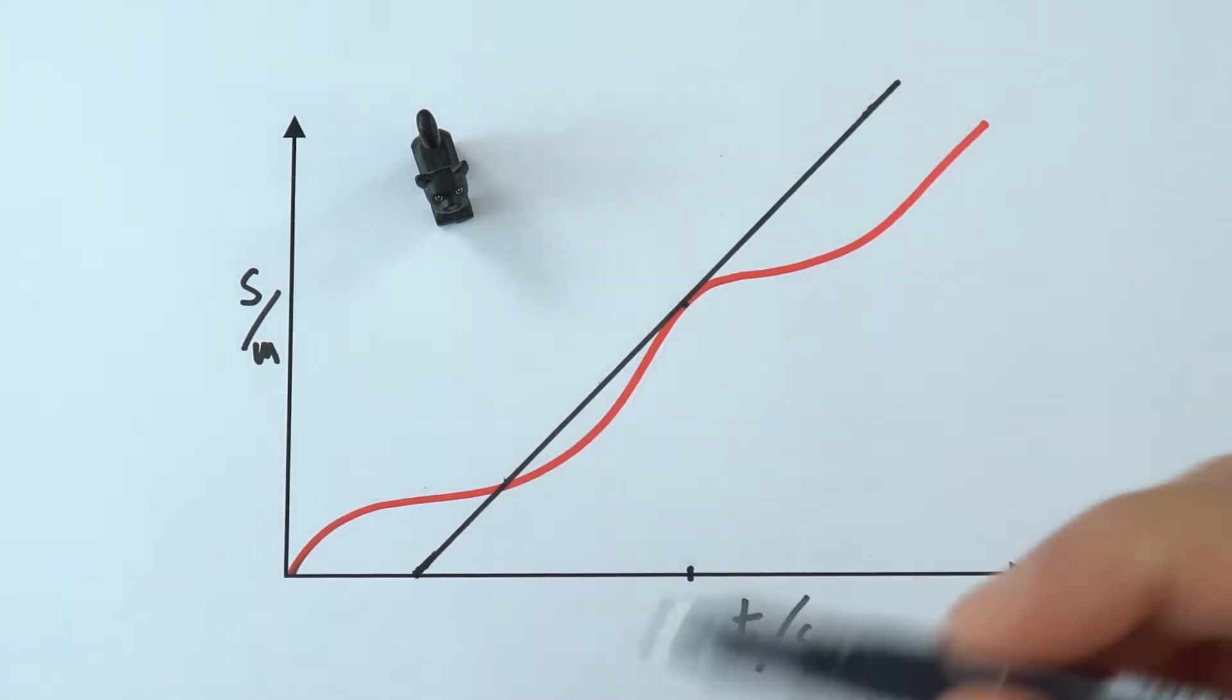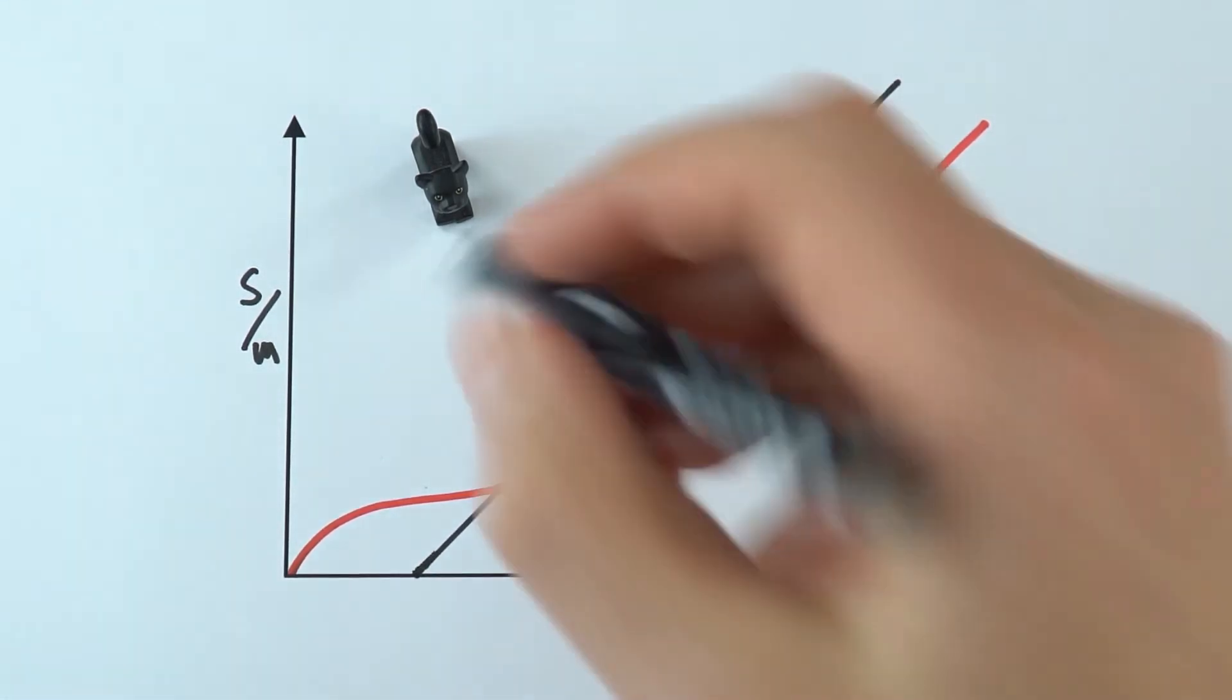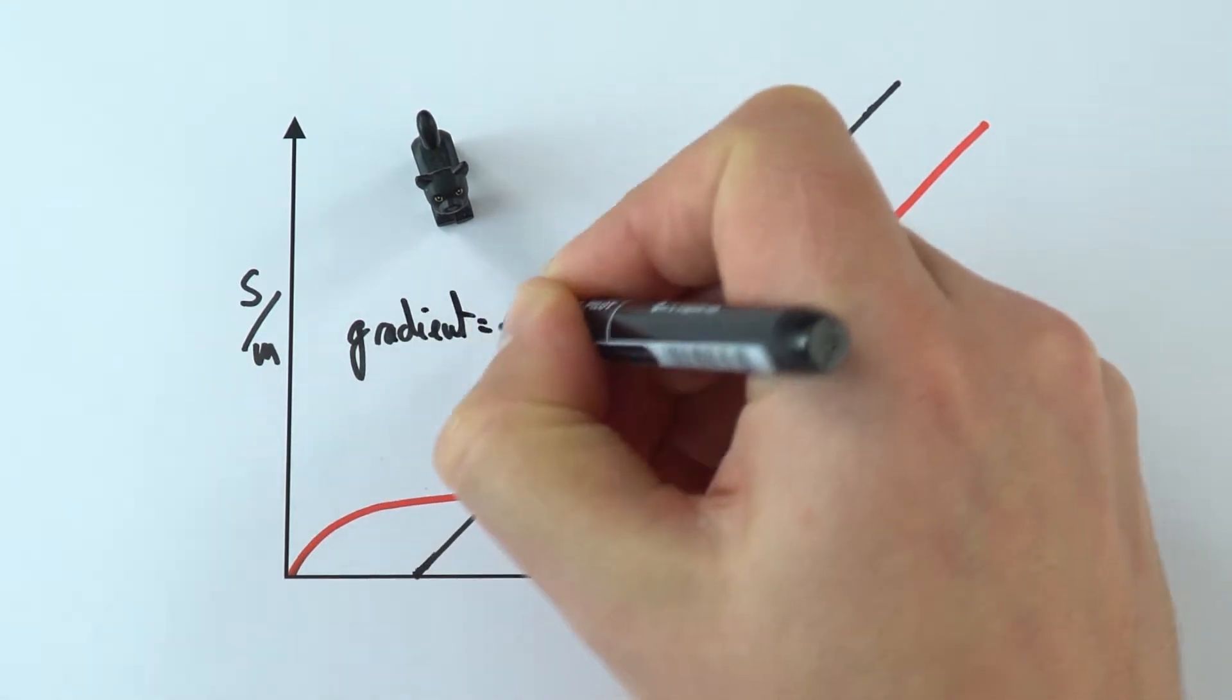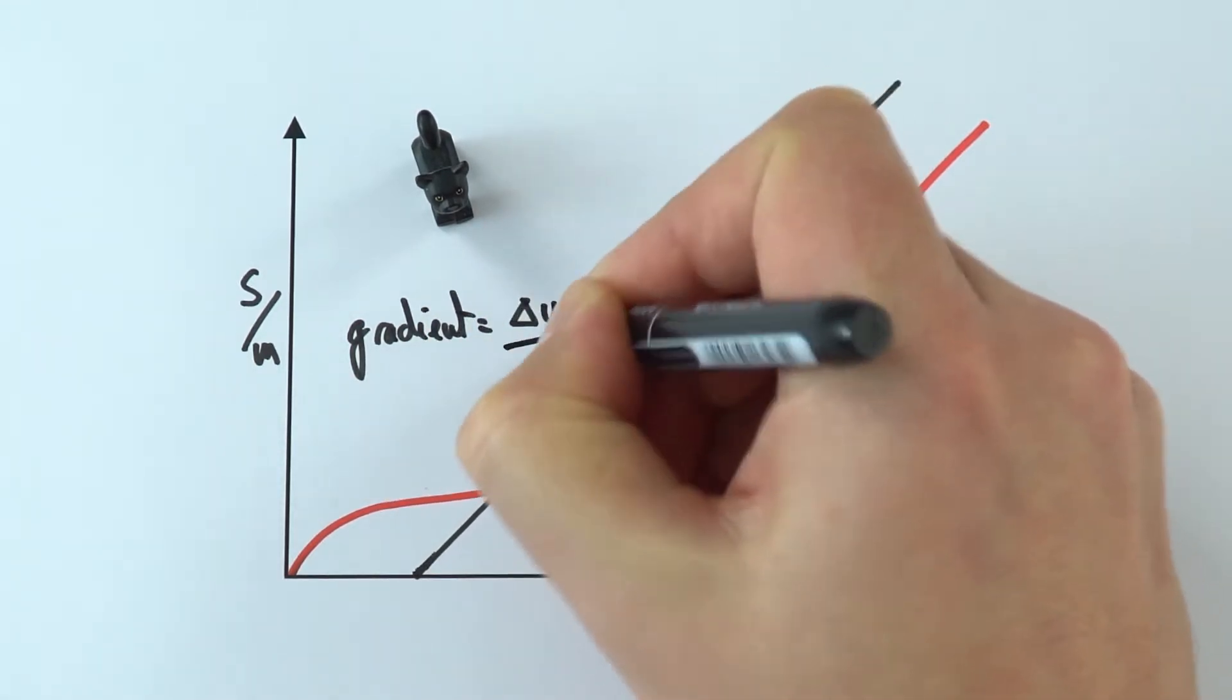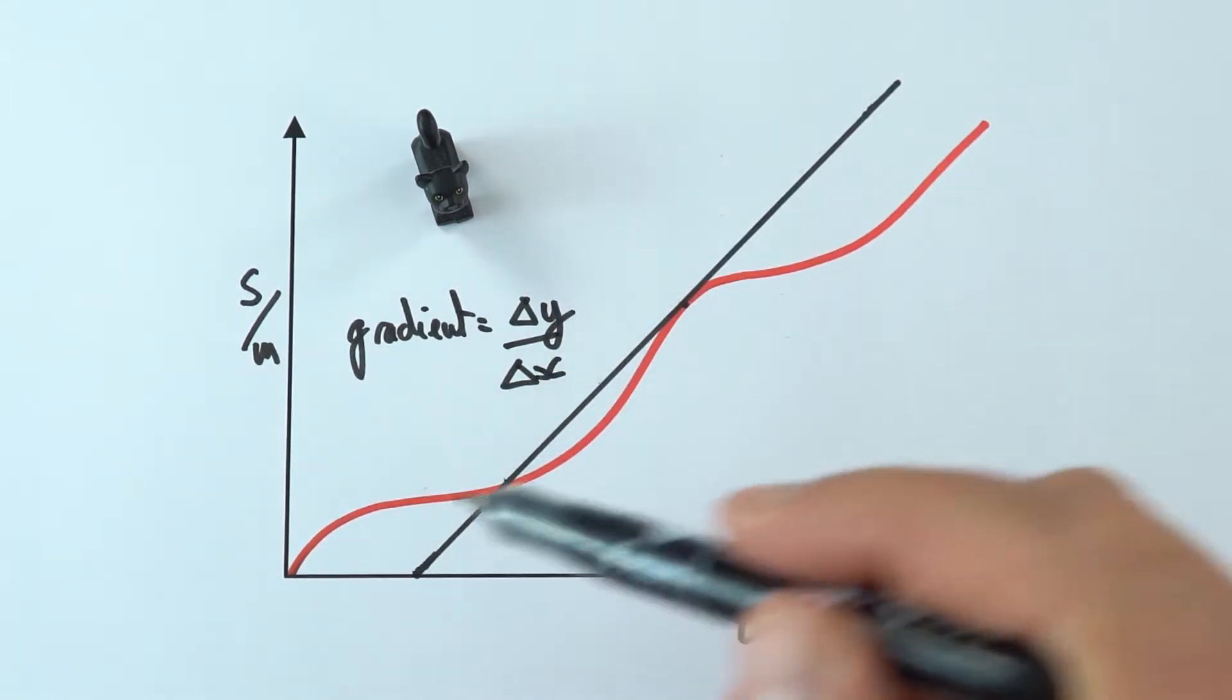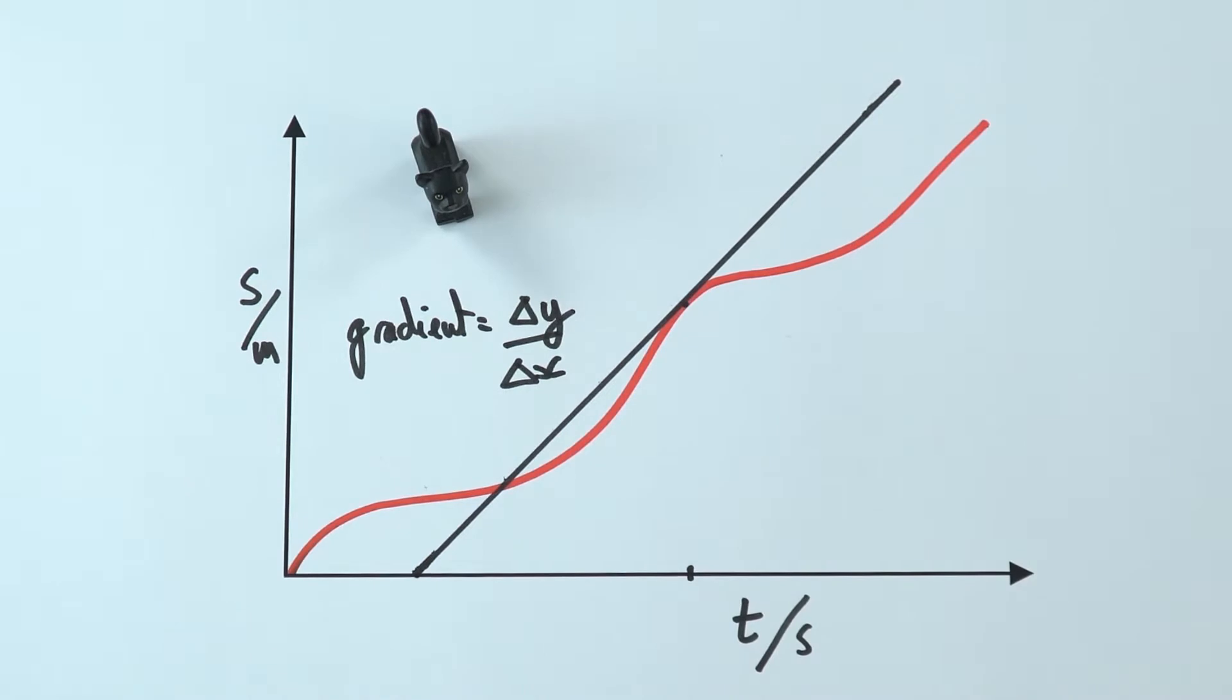Once I've got this, I can then just work out the gradient in the usual way. Remembering, of course, that the gradient is equal to the change in y value divided by the change in x value. And the best way to take your values of x and y is to pick two points on this line.